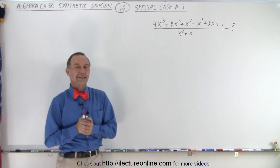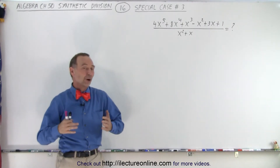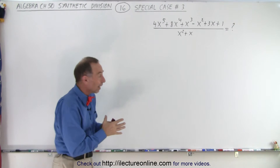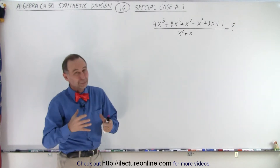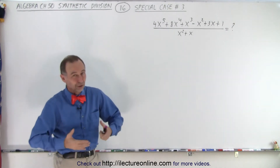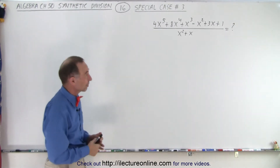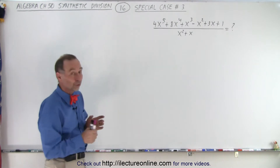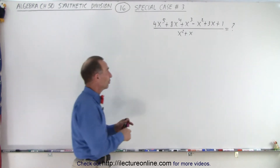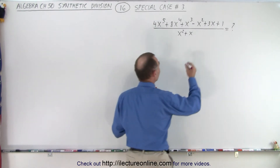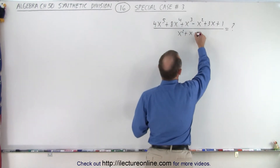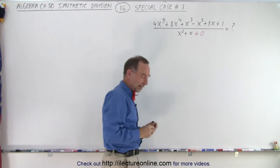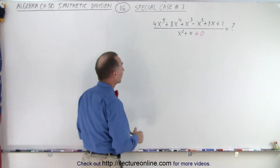Welcome to Electronline. Let's try one more example of this type where the denominator is not simply an x plus 1 or an x minus 3 or something like that. It's x squared plus x. Notice there's a missing term, so let's add the missing term, plus 0. Now we're ready to try synthetic division.